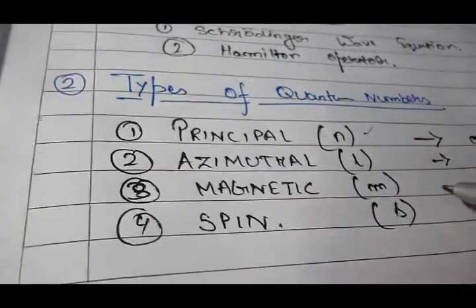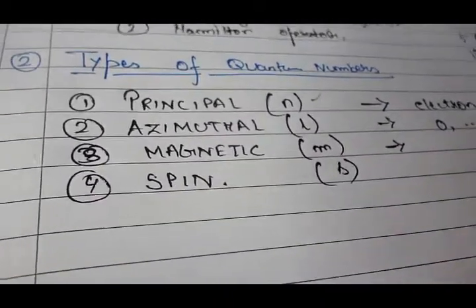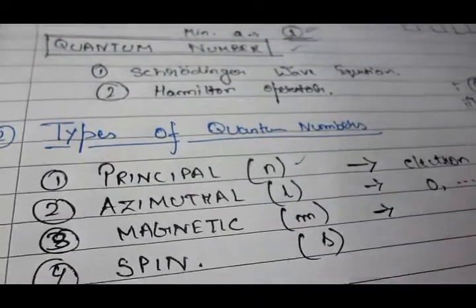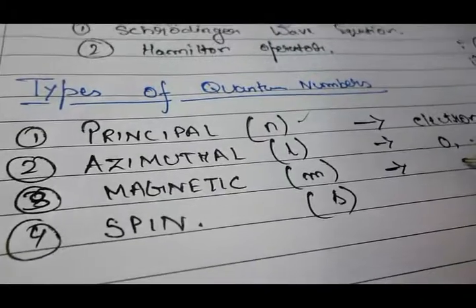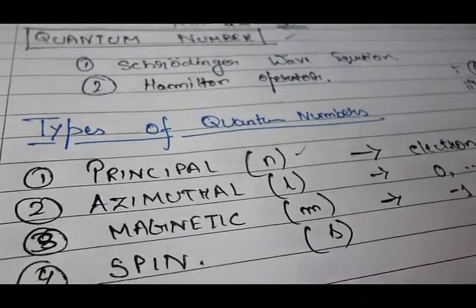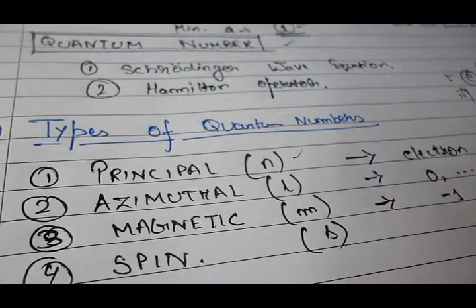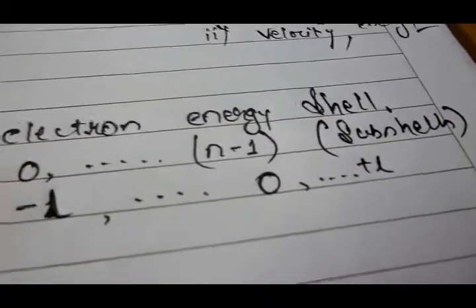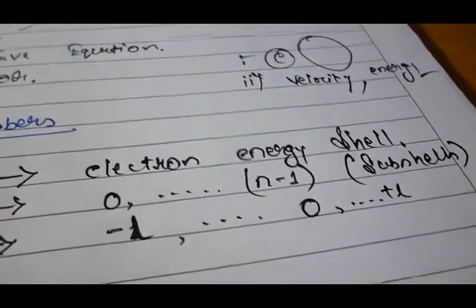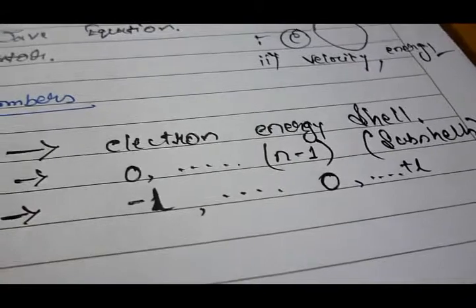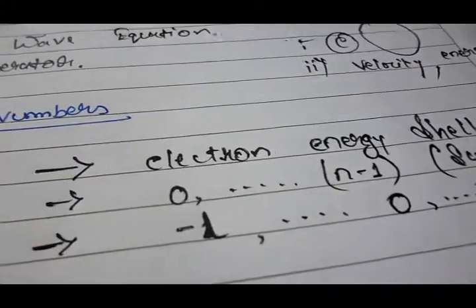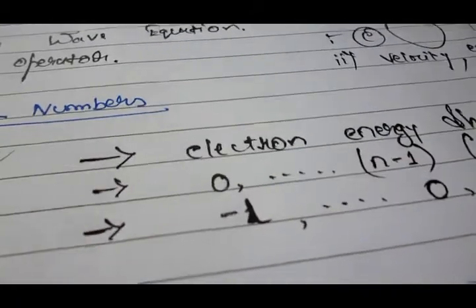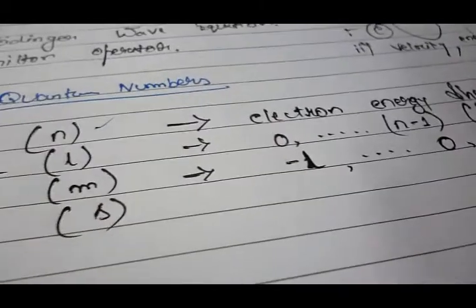The next quantum number is the magnetic quantum number. And this quantum number begins from minus L and it will continue, it will include zero and then again continue to plus L, positive L. And what do they denote? They give the specific orbital or cloud within the sub-shells and is the projection of the orbital angular momentum along a specific axis.